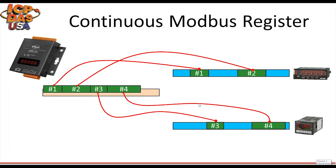As you can see from the slide, the Modbus data of some Modbus RTU devices are not stored continuously. In conventional communication, the computer will send multiple commands to read Modbus data, and if it requires reading or writing data several times, the efficiency and communication speed will be very slow. The Modbus Data Concentrator will organize the data from multiple RS-485 devices to be stored continuously, no matter if the original data is continuous or not. This way, the PC can read large amounts of data at once and increase the efficiency of communication.